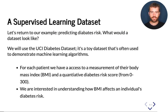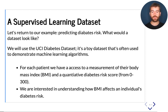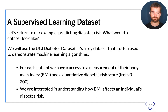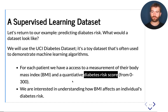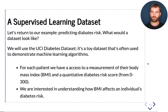Let's start with the supervised learning dataset. In our example of predicting diabetes risk, we are going to use a very common dataset called the UCI diabetes dataset. This is called a toy dataset because it's relatively small and is used widely for teaching machine learning. Specifically, this dataset has different physiological measurements; in particular, the measurement we are interested in is the body mass index, or BMI. We will have for each patient their BMI and also a diabetes risk score, which is a number from 0 to 300 indicating how much at risk a person is for developing diabetes. Our goal is to understand the relationship between these two variables.